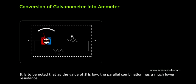It is to be noted that as the value of S is low, the parallel combination has a much lower resistance. It is for this reason that ammeters have very low resistance. Ideal ammeters have zero resistance.